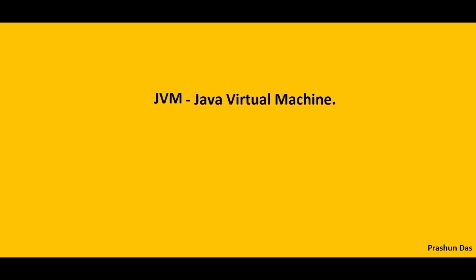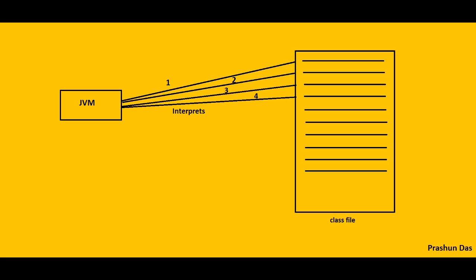Now what does JVM exactly do? JVM i.e. Java Virtual Machine works as an interpreter for your code. That is, it reads the .class file of your Java program line by line and helps in its execution. If there is an error in any line, then it does not execute the code further based on conditions.